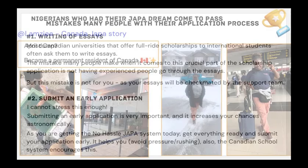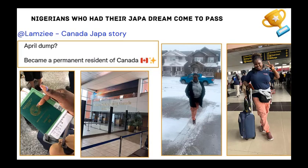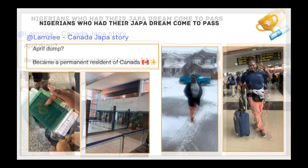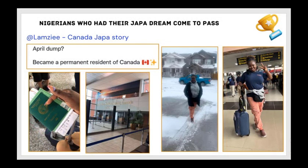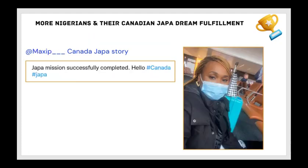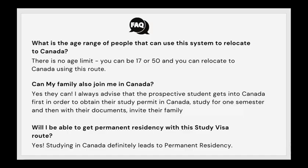Like I promised, here are more people from Nigeria who have fulfilled their Canadian dream. This is Lamzee — her Japa story shows she said 'I became a permanent resident of Canada,' as you can see from the environment. And this is the last person I'll share — Manzip, who said 'Japa mission successfully completed.'